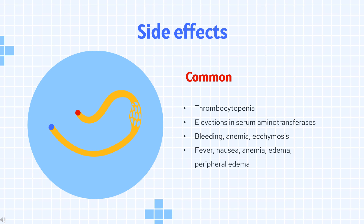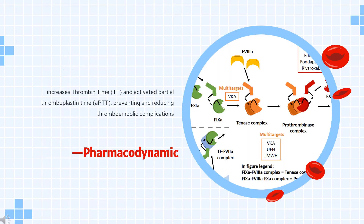In people being treated for deep vein thrombosis: injection site hemorrhage, injection site pain, hematuria (≥2%).